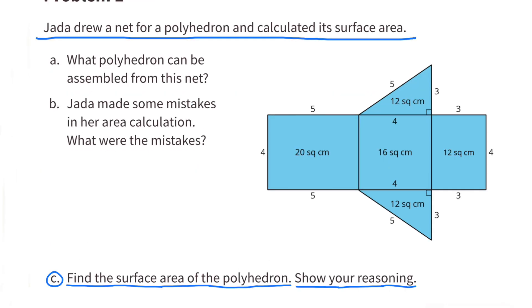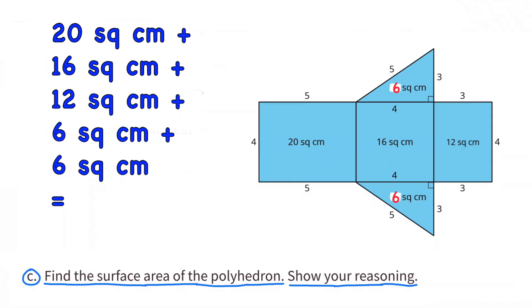Part C: Find the surface area of the polyhedron. Show your reasoning. They provide us with the surface area for each figure: 20 square centimeters plus 16 square centimeters plus 12 square centimeters plus 6 square centimeters plus 6 square centimeters equals a total surface area of 60 square centimeters.